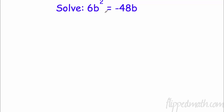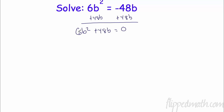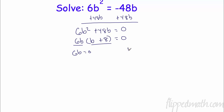All right, now we're going to solve. Remember — to solve, get everything equal to zero and make sure the quadratic term is positive. So I'm going to add 48b to both sides, giving me 6b squared plus 48b equals zero. Looking for a common factor: 6 goes into 48, and I have both a b squared and a b, so I take out 6b. That gives me 6b times (b plus 8) equals zero. Set each factor equal to zero: b equals zero, or b equals negative 8. Zero product property coming in handy.